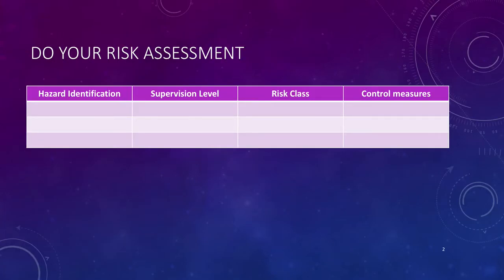to do your hazard identification, nominate your supervision level, risk class being high, low, or medium, and then what control measures can you put in place to minimize the risks that you've identified.